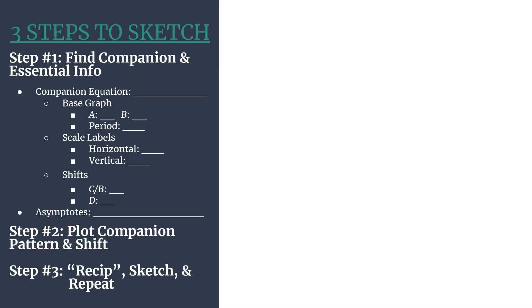Here's an outline of our method. I use this for every graph, just to stay organized. A quick overview: you'll see step 1, we're going to find the companion equation and all of its essential information. That's simply the reciprocal equation—we'll replace the secant with its reciprocal cosine.